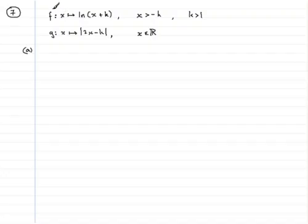Welcome to question number 7. In this question we're given two functions f and g and we have to sketch them on separate axes stating the coordinates of the points where the graph meets those coordinate axes.